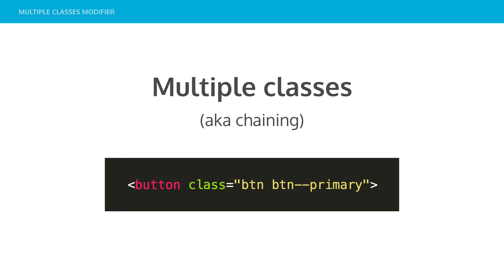Then we've got multiple classes — this is chaining classes together to style something. Say you want a button that's big and green: you go button, button-primary, but you'll notice I've repeated the word button twice, so it gets redundant, especially if you've got a really long version of a button — you could repeat button a dozen times and it's just pointless. Having multiple classes also means source order could become a problem: if you put one before the other it could have a completely different outcome than what you expect.